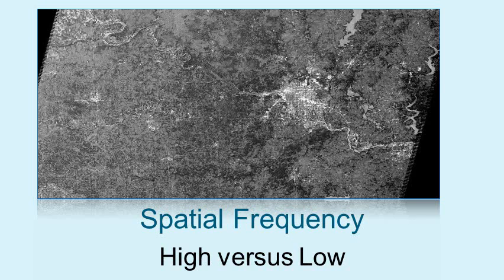So what might this look like in an actual satellite image? Using the same Band 1 Landsat thematic mapper image of the Tulsa Regional Area, we can focus on two different sections of the image where the spatial frequencies are different. The first section, outlined by the yellow circle, has a high spatial frequency. Notice that the changes in brightness values, as depicted by the varying shades of white, grey, and black, change rapidly within the circled area.